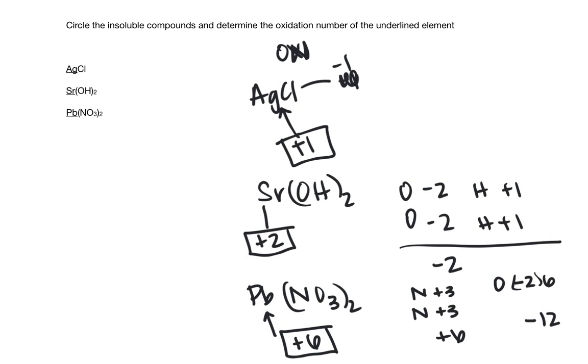So then over here on the other side, it also asks us to circle the insoluble compounds. If you look at your solubility table, you can see that chloride ions, when connected to silver, are insoluble. All nitrates are soluble, and hydroxides, when connected with strontium, also insoluble. So those are the ones that you're looking to find.